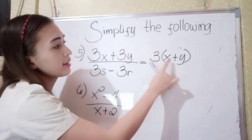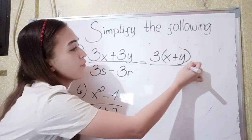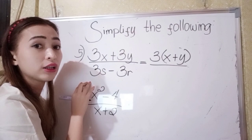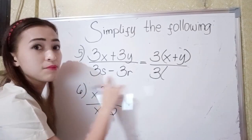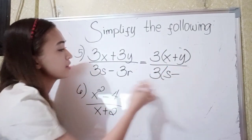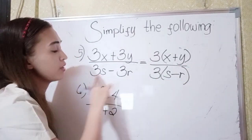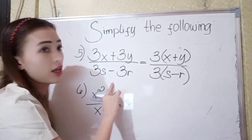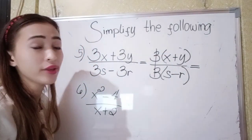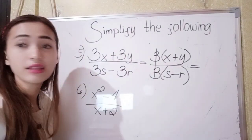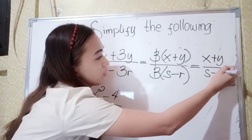To check it: 3 times x, we have 3x; 3 times y, we have positive 3y. What is the common factor in our denominator? We have also 3. So 3s divided by 3 is s, minus 3r divided by 3 is r. To check: 3 times s is 3s, minus 3 times r is 3r. Now simplify. Since 3 divided by 3 is 1, so that is cancelled. Our final answer is x plus y over s minus r.